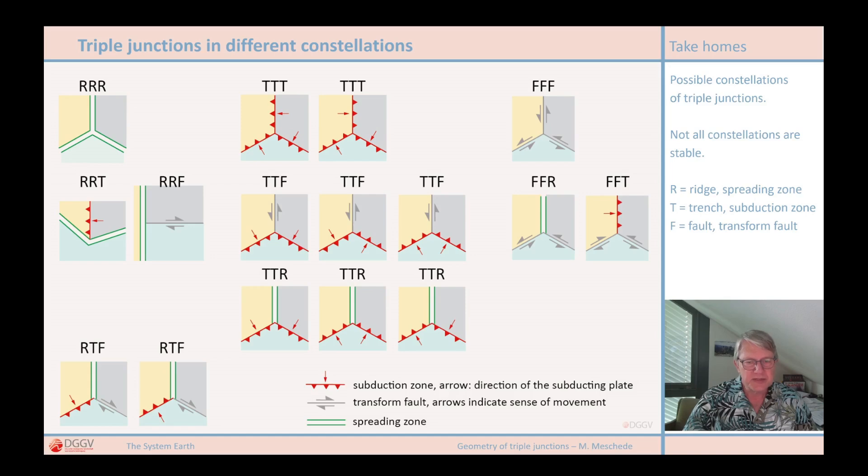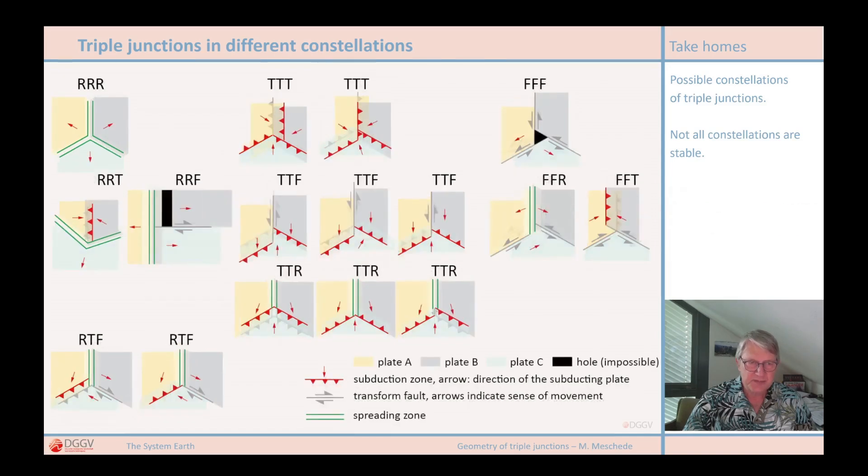Let's take a look at the movements at the triple junctions. The arrangement of the different types here in this figure is exactly the same as in the previous illustration, except that here the plates, which are shown in different colors with yellow, gray and light blue, have been moved slightly away from their original position.